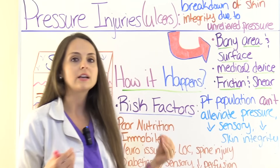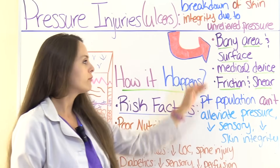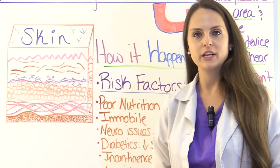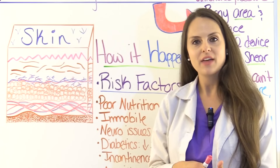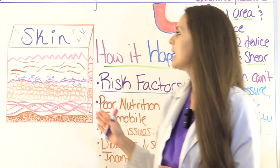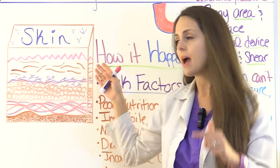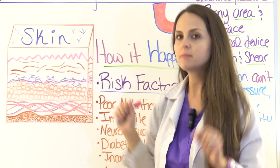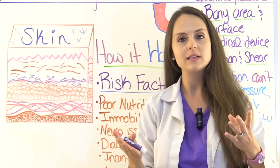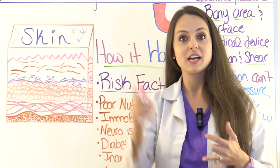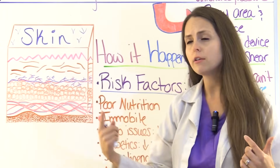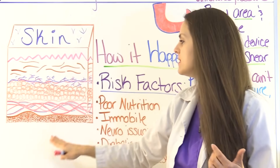Pressure injuries can also be caused by some type of medical device, or by friction and shear, which we'll talk about in depth shortly. To understand how a pressure injury happens, we first need to review the basic layers of the skin. We have the epidermis on top, then the dermis below that. Right below the dermis, we have the capillary bed, which feeds, perfuses, and supplies the dermis and epidermis. Below that we have fatty subcutaneous tissue, followed by muscle and then bone.